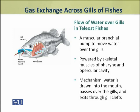This branchial pump is powered by skeletal muscles of the pharynx and upper collar cavity. This pump works as the water is drawn into the mouth, then water is passed over the gills and it exits through the gill clefts or gill openings. This is the pumping mechanism of the branchial cavity.